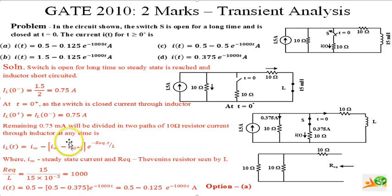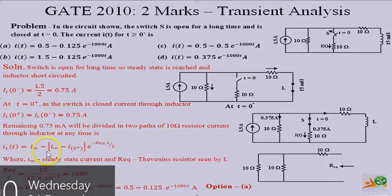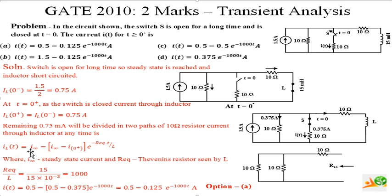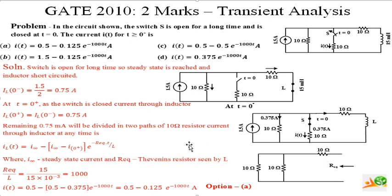The current through the inductor at any instant is given by i_L(t) = i_infinity minus (i_infinity minus i(0+)) times e to the power of minus t times R_equivalent divided by L. Here i_infinity is the steady-state current through the inductor. When steady state is reached, the 1.5 amperes divides equally among three branches, giving 0.5 amperes.